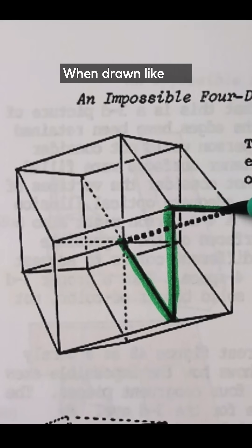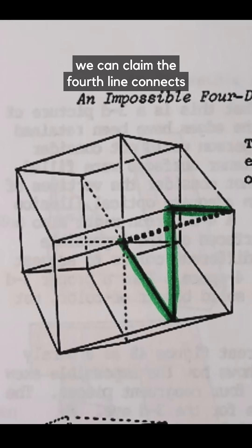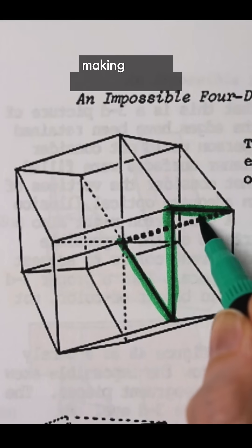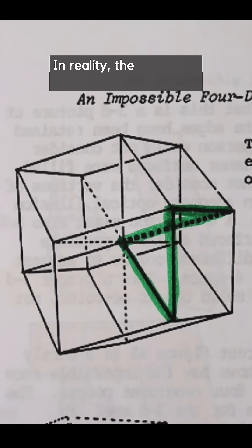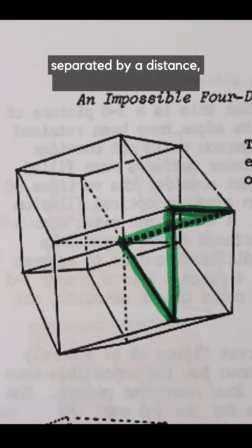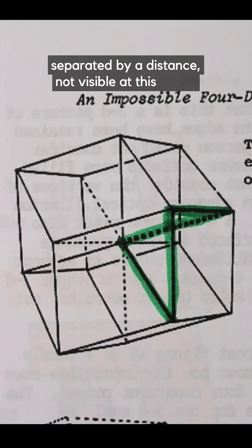When drawn like this we can claim the fourth line connects at the front corner making the 4D impossible object. In reality the fourth line lands at the back corner separated by a distance not visible at this angle.